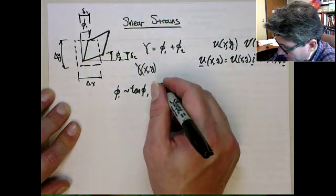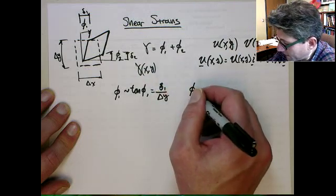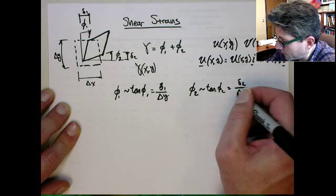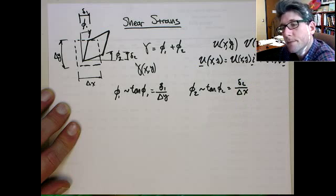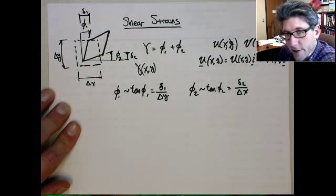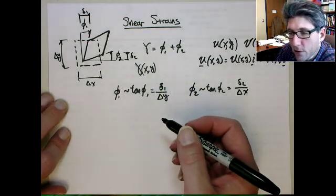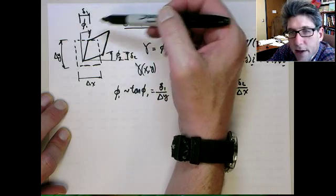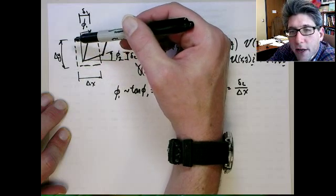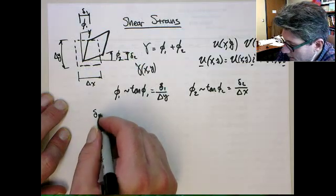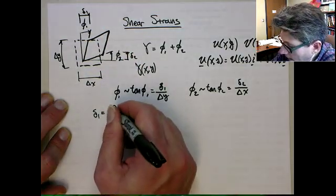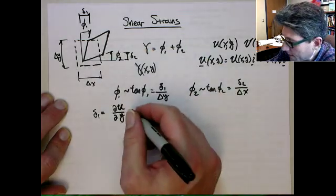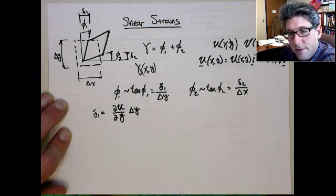Likewise, we can get theta2, which is approximately equal to the tangent of theta2, which is delta2 over delta x. So how do we get delta1 and delta2? You can do a Taylor series expansion. Delta1 is a displacement in the x direction, but it comes about because of a change in y. So delta1 is the change in the x displacement with respect to y, multiplied by that finite distance delta y.